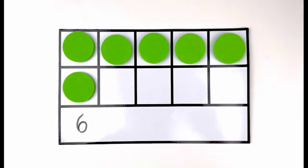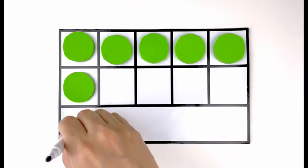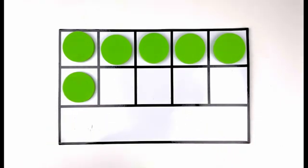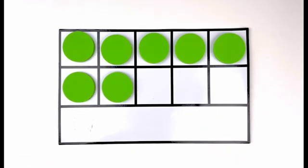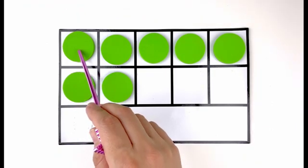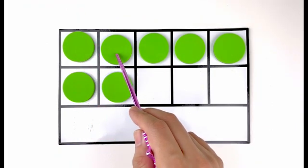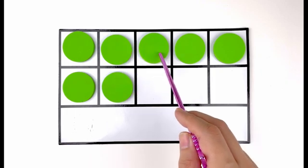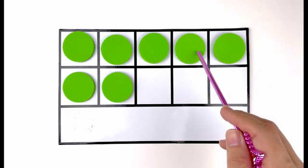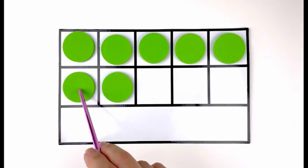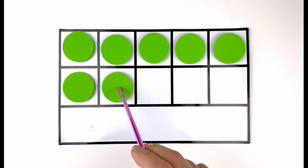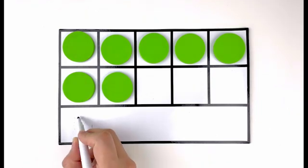Great job. All right, let's add one more. How many green circles do you see this time? One, two, three, four, five, six, seven. Seven green circles. Number seven.